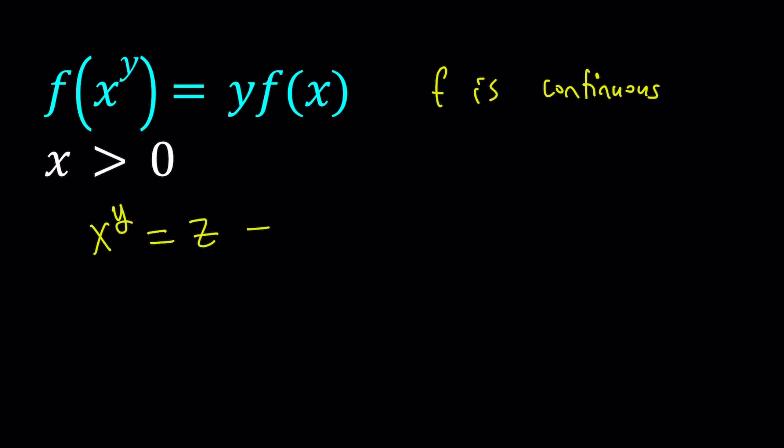And from here we can notice that x is positive, so we can ln both sides. ln x to the power y equals ln z. But of course when x is positive, x to the power y is also going to be positive, therefore z is also positive.